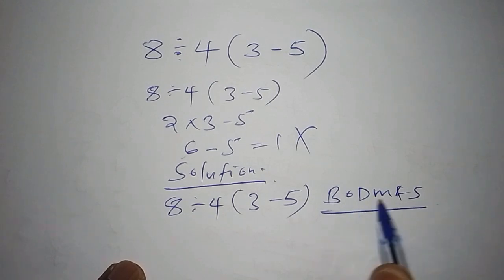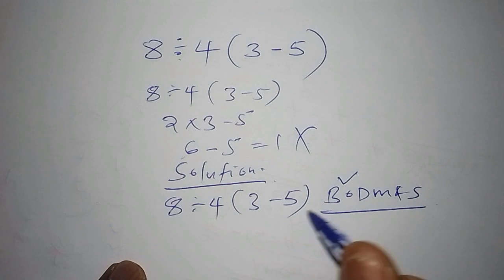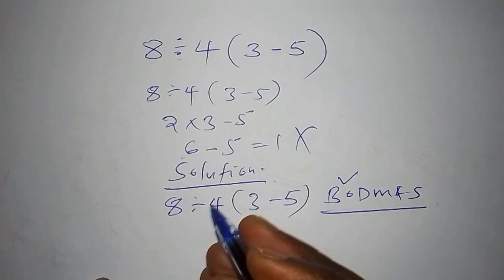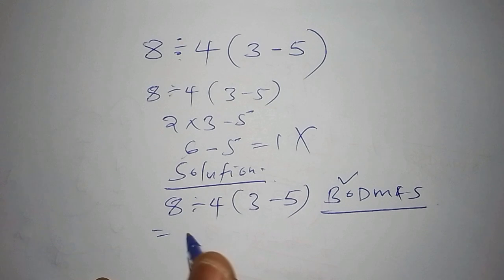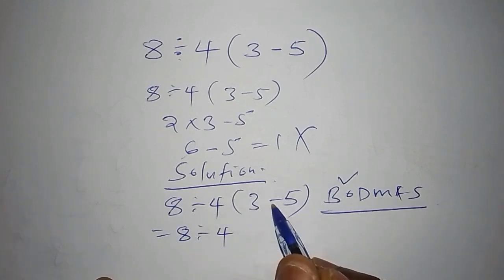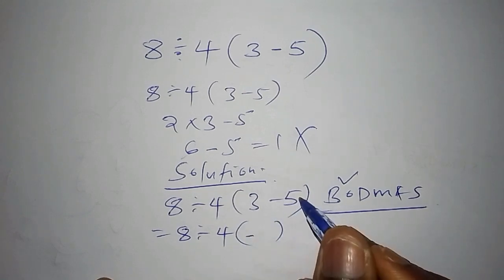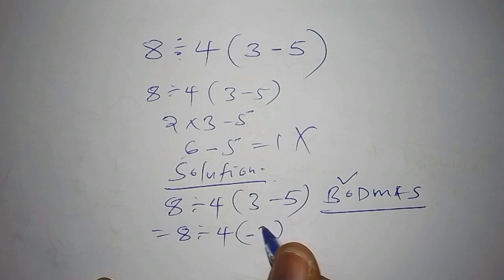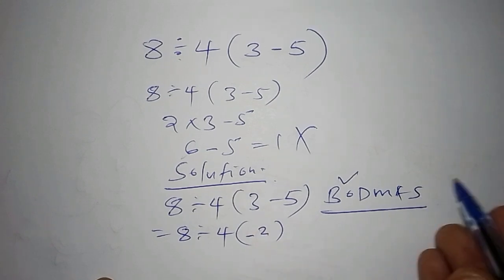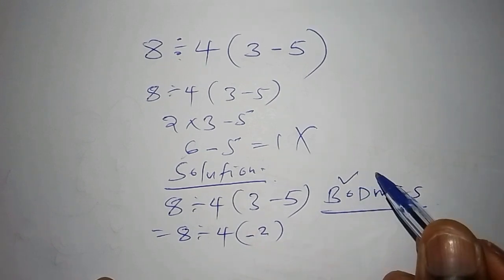Under the order of operations, we have B which stands for bracket, so let's work out the bracket first. This equals 8 divide by 4. When you work out the number inside the bracket, we shall have into bracket minus 3 subtract from 5, so 3 subtract from 5 is minus 2.